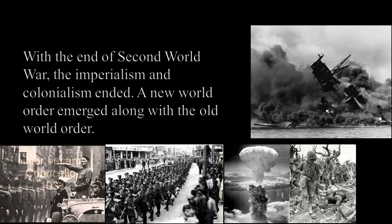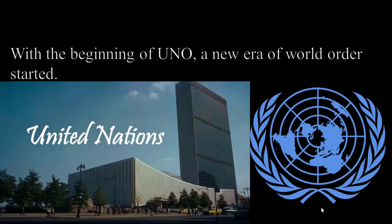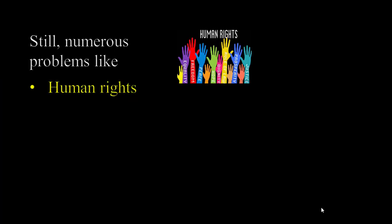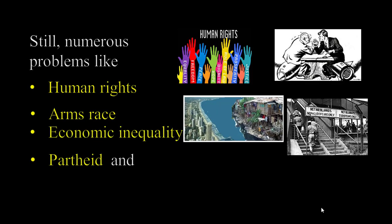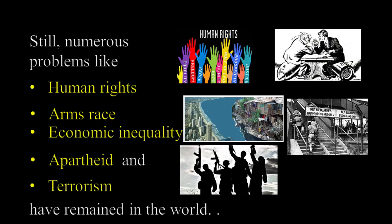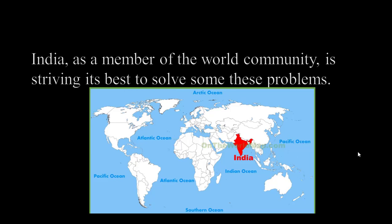With the end of the Second World War, imperialism and colonialism ended and a new world order emerged. With the beginning of the UNO, a new era of world order started. As a result, numerous problems like human rights, arms race, economic inequality, apartheid and terrorism have remained in the world. India, as a member of the world community, is striving its best to solve these problems.